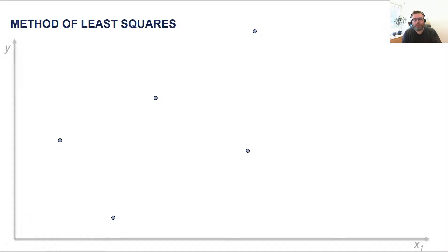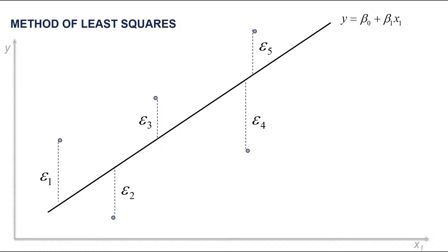Now assume that we try to fit the following linear regression model. So we have Y is equal to beta 0 plus beta 1 X1. So we have this fitted line in this case as the model. We can see that the model will not be exactly the same as the observed values, so we will have errors or residuals in terms of these distances. We can call them epsilon 1, epsilon 2, and so on.